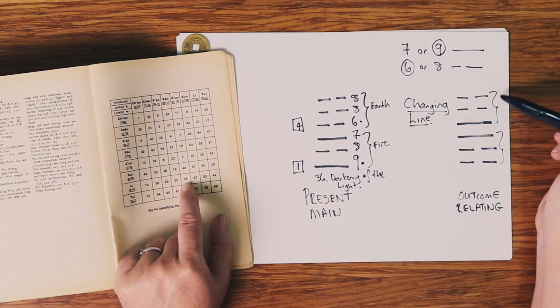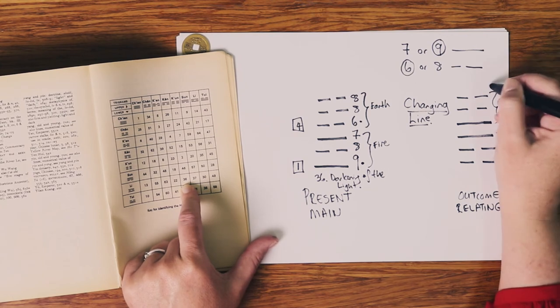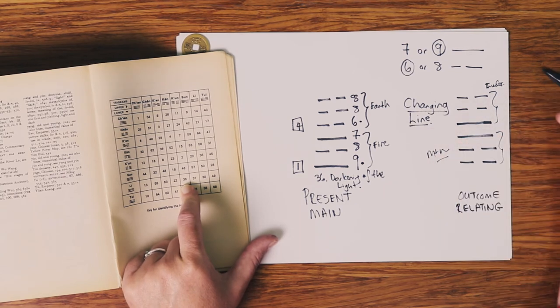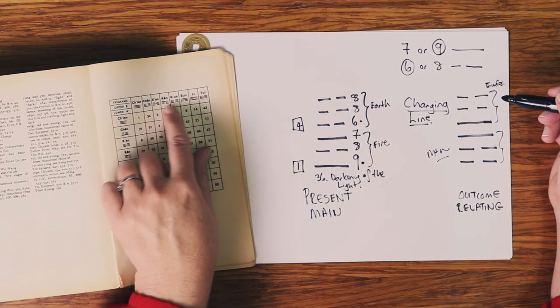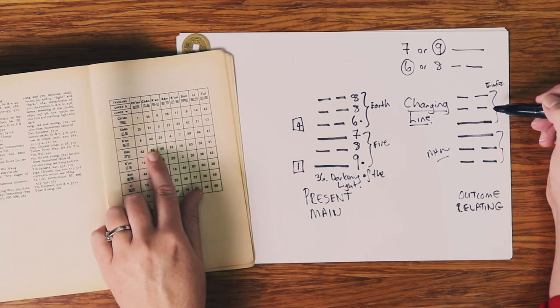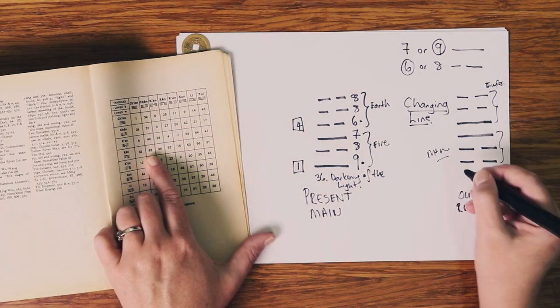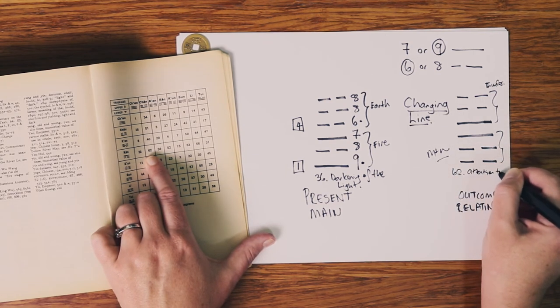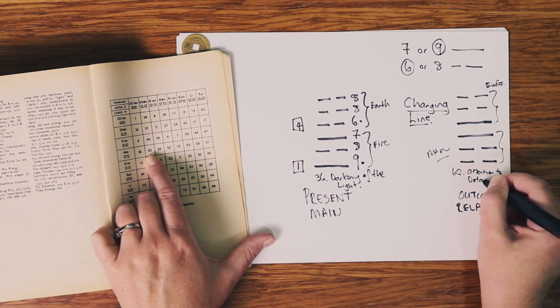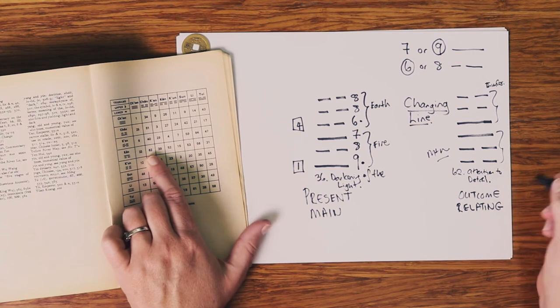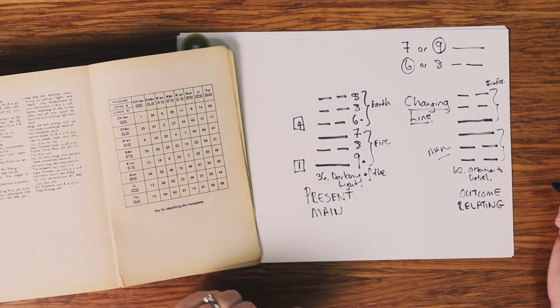Now we look at our outcome hexagram. Our top trigram is thunder, and our bottom one is mountain. So thunder, here we have thunder in the top. We go down until we found mountain. There we have 62, attention to detail. Another famous friend on the channel. And so that is the process.